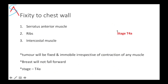Fixity to the chest wall means the lump is totally immobile regardless of contraction of any muscle. The chest wall consists of only three things: ribs, intercostal muscles, and serratus anterior. If there is any fixity to the chest wall, the stage is T4A.